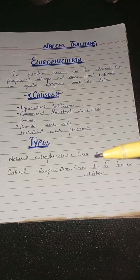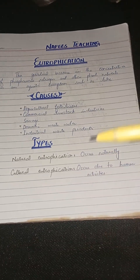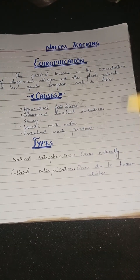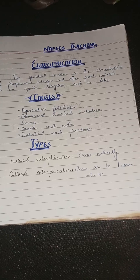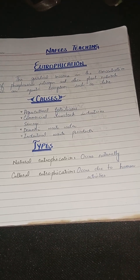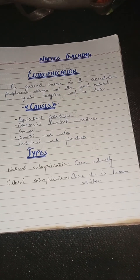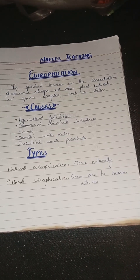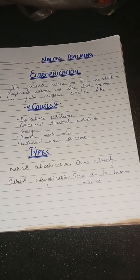We will talk about two types of eutrophication: natural and cultural. Natural eutrophication is naturally produced — it is a natural process. Cultural eutrophication is due to human activities. Human activities such as industries, agriculture, and fertilizers that cause eutrophication are called cultural eutrophication.